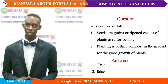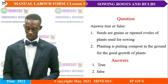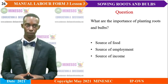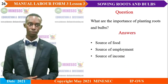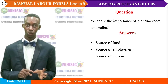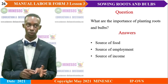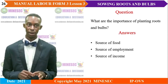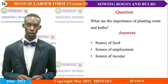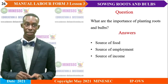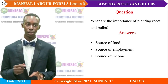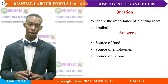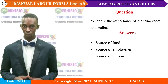Question two is false — planting is not putting compost in the ground. Next question: what are the importance of planting roots and bulbs? It is important to plant roots and bulbs because it is a source of food, a source of employment, and a source of income.